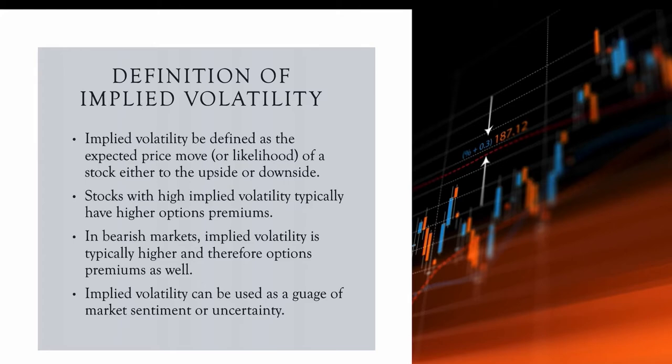Definition of implied volatility: implied volatility can be defined as the expected price move or likelihood of a stock either to the upside or downside. A stock approaching earnings, for example, will have higher implied volatility because that stock is expected to make a large move. This impacts the options premiums — stocks with high implied volatility typically have higher options premiums. In bearish markets, implied volatility will typically be higher, and therefore options premiums will be higher as well.